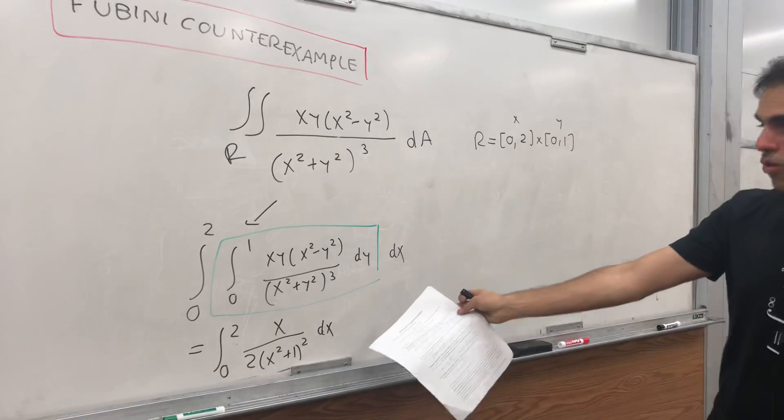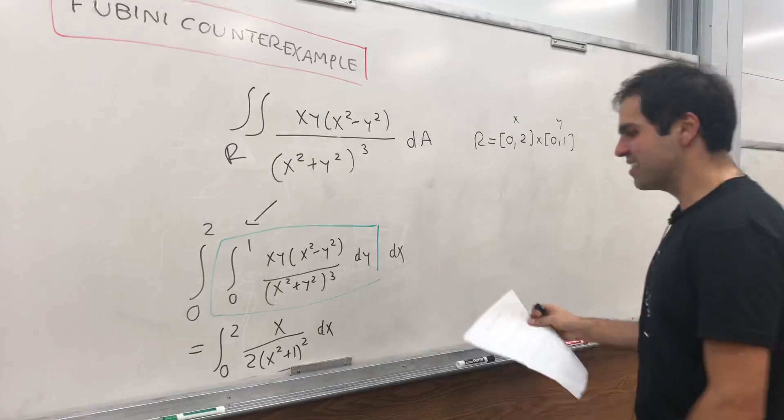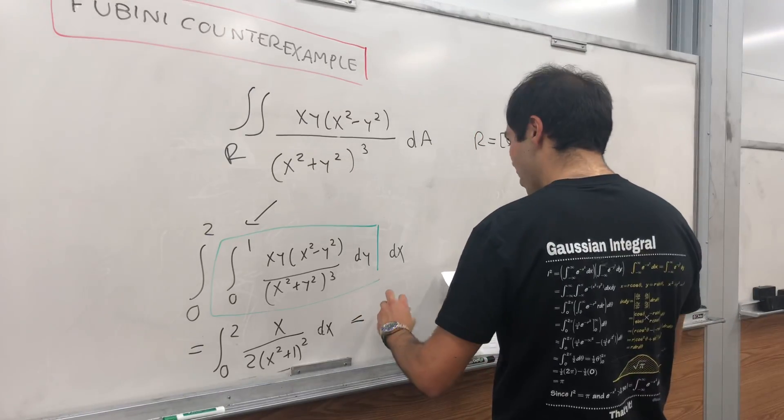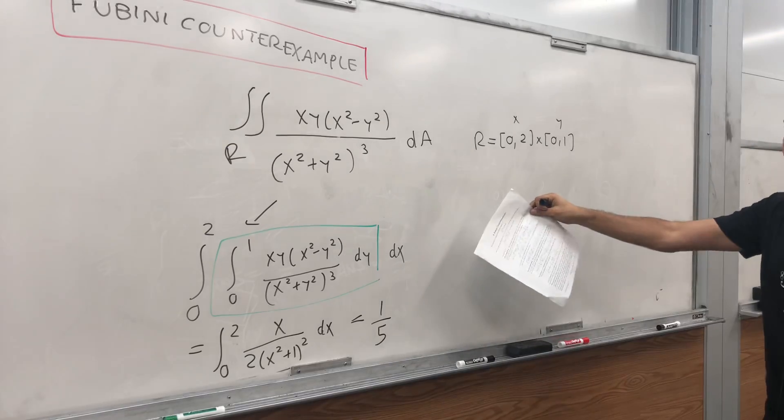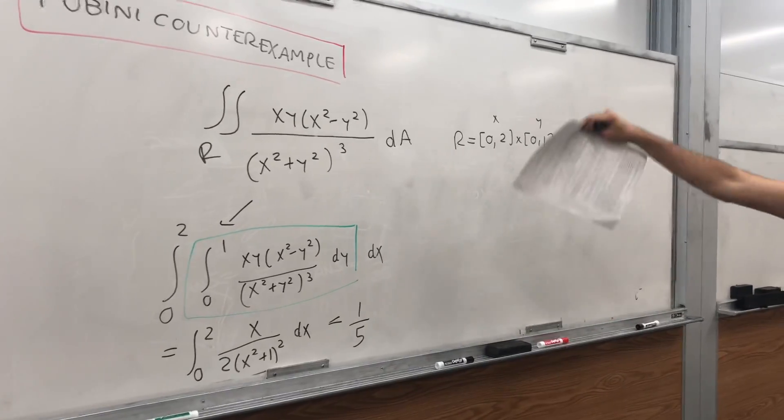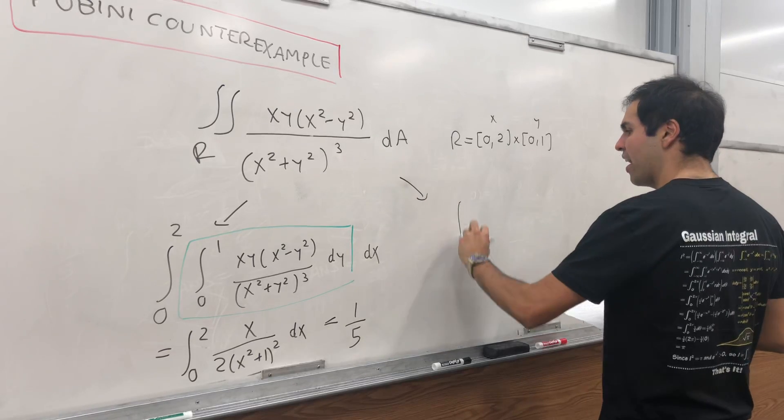And then, in order to calculate that, you can use another u substitution, x squared plus 1, and you get 1/5. So that's one way of integrating, with respect to y first and then with respect to x. Now let's do the other way.